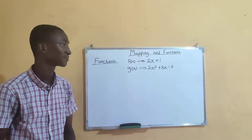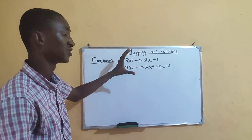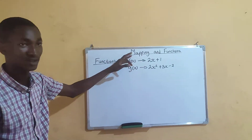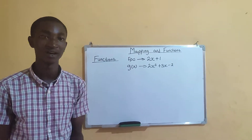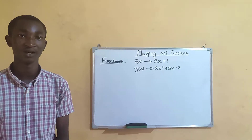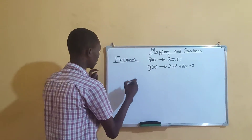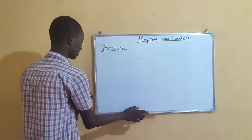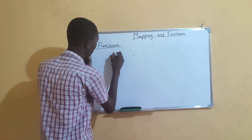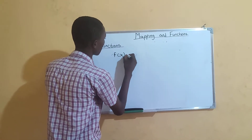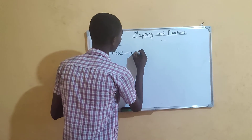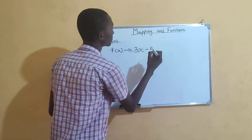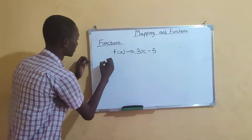What we'll be doing today is how we can substitute — how we can replace x with a number to get a particular value. That is what a function is about. For example, take the function f(x) = 3x − 5.